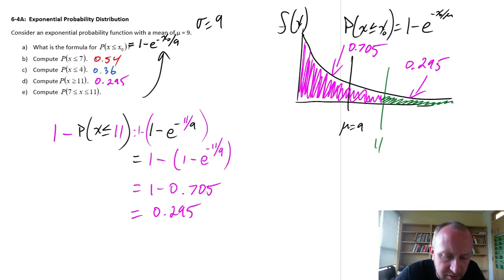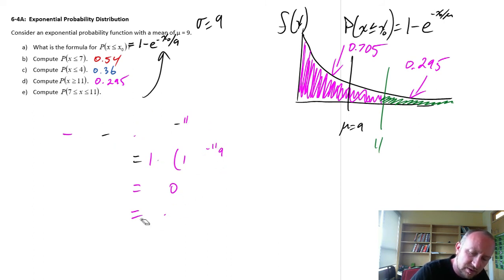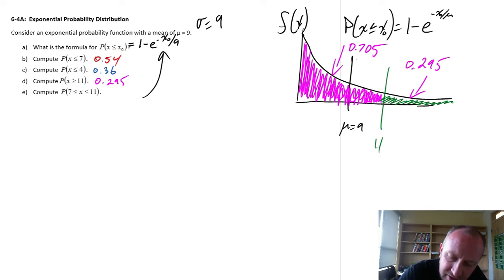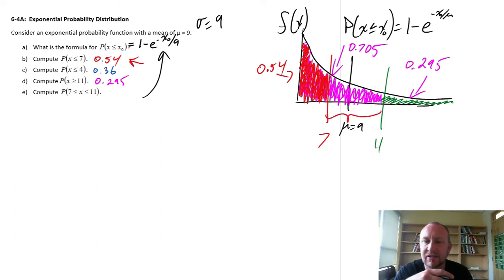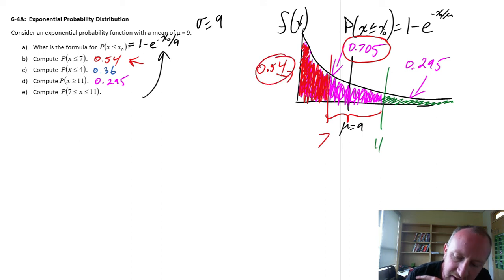Now let's look at E. Compute the probability that x is between 7 and 11. Well, we can use the information that I think we already have, because I have this pink area here which is 0.705. Here we've calculated the value for 7, and I know that this region here we already calculated was 0.54. So if I want what's left, if I want that pink space left over in here, that's going to be the probability that we calculated for x less than 11 minus x less than 7. Did I say that right? Here's x less than 11, here's x less than 7.